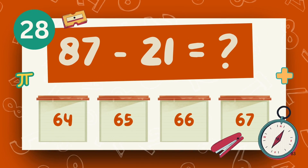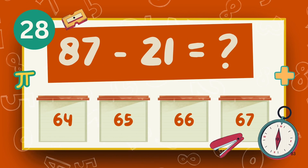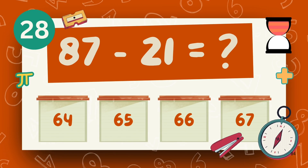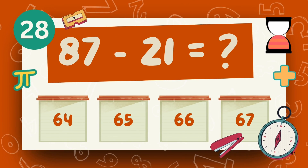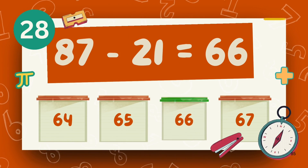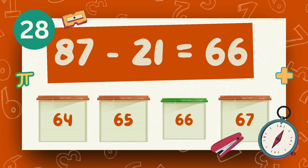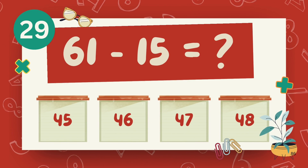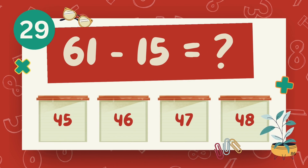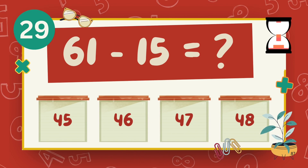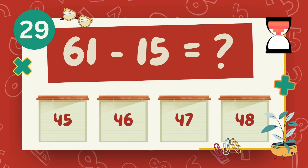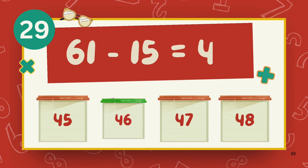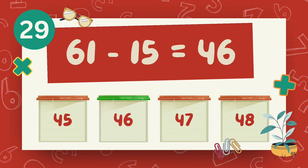What is 87 minus 21? The answer is 66. What is 61 minus 15? The answer is 46.